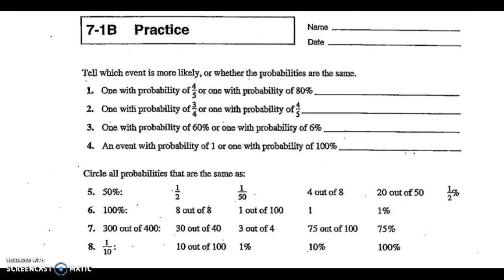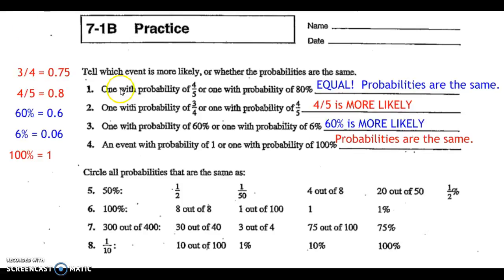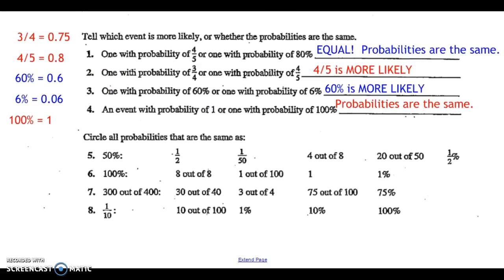Pause the video now and try to answer questions 1 through 4. You can see the probabilities calculated on the left. For question number 1, they're equal because the probabilities are the same. For questions 2 and 3, one is more likely because its decimal is a higher value. For question number 4, 100% is 100 divided by 100, which equals 1. For the last exercises, you're supposed to circle all probabilities that are the same as 50%, 100%, etc. Convert these into decimals and figure out which ones share the same decimal value. Pause the video now.